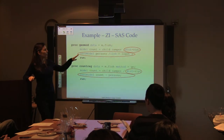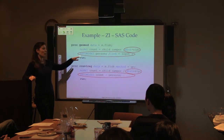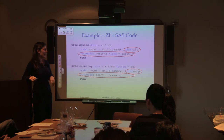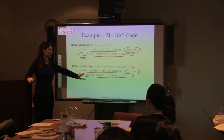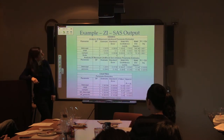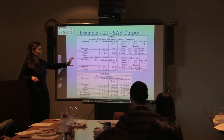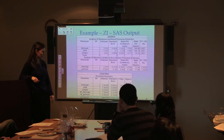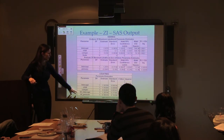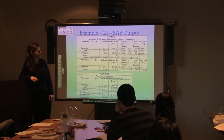The genmod output clearly separates the count regression from the logit regression for zero inflation. In countreg, the zero-inflated estimates appear at the bottom with an INF prefix. The output is essentially the same between the two procs.